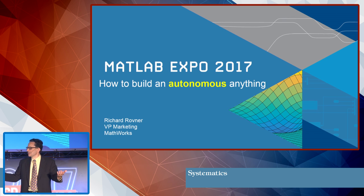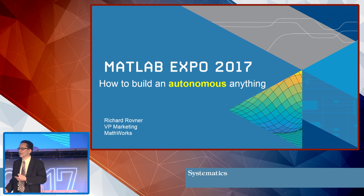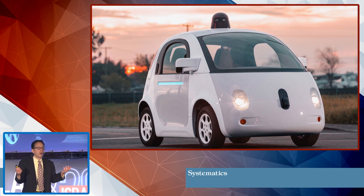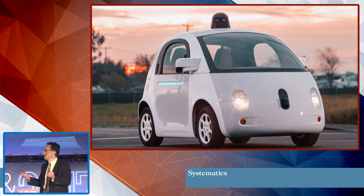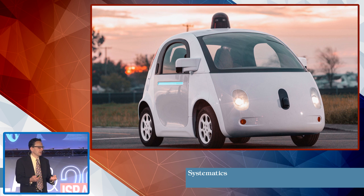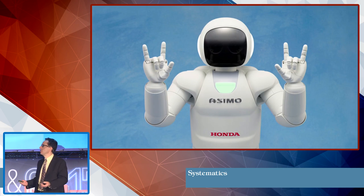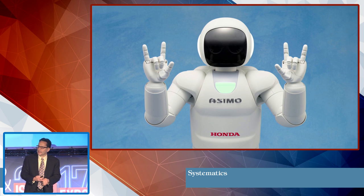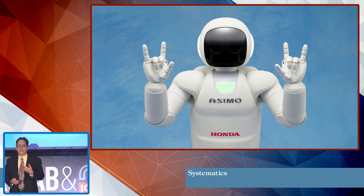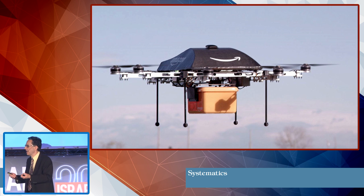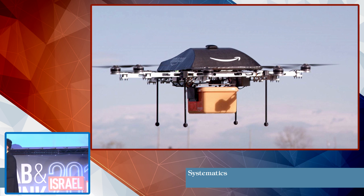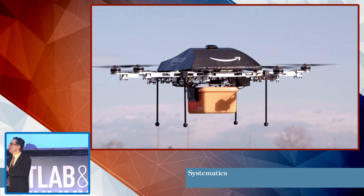When you think about autonomous systems, what comes to mind? Certainly most people immediately think about self-driving cars — almost literally every week there's some announcement about technology advancements in autonomous driving. Also robotics, humanoid robots like Asimo from Honda, is another rapidly growing area. And of course drones — not just for government and defense, but we're starting to see real examples of drones being tested for commercial applications, including retail package delivery.